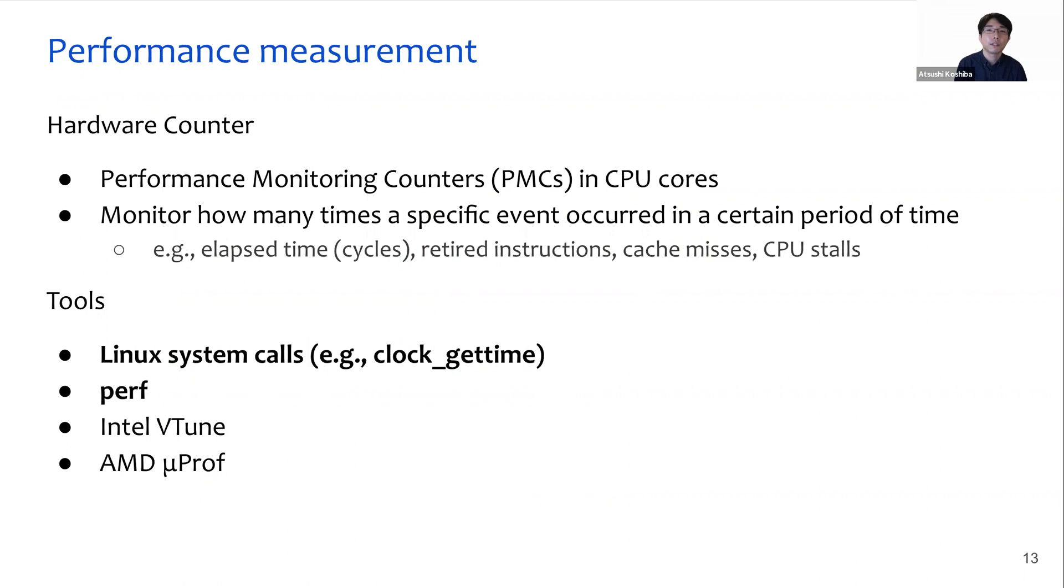Finally, I would like to introduce some tools to measure and analyze the performance of programs. Performance measurement and analysis of the system are very important to quantify the effectiveness of the code optimization you apply and also to detect the bottlenecks for further optimizations. The hardware counter is one of the most major ways to evaluate the system and is widely supported by computer systems. I'd like to quickly introduce two basic ways to use the performance counters: the first one is via system calls, and the second one is perf.